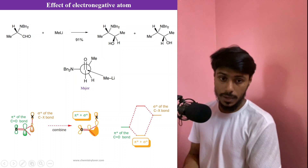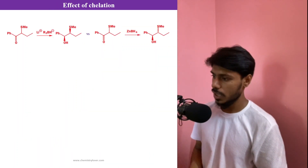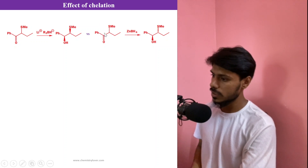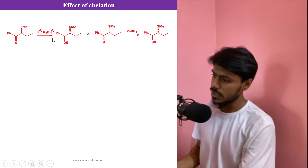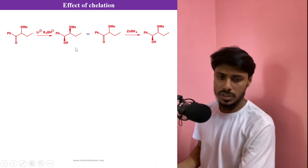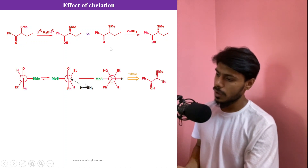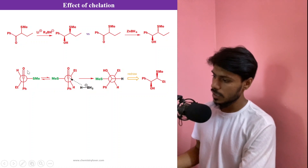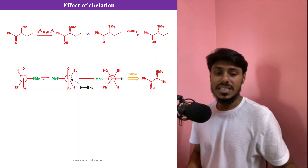The next topic is the effect of chelation on the Felkin-Anh model. Taking the same starting material but different borohydride reagents — one with lithium counter-cation, one with zinc(II) — the outcomes are totally different. With lithium, simple Felkin-Anh is followed: attack through the less-hindered side of the most stable conformation gives one product. But zinc(II) is very good at coordinating and forming chelates.